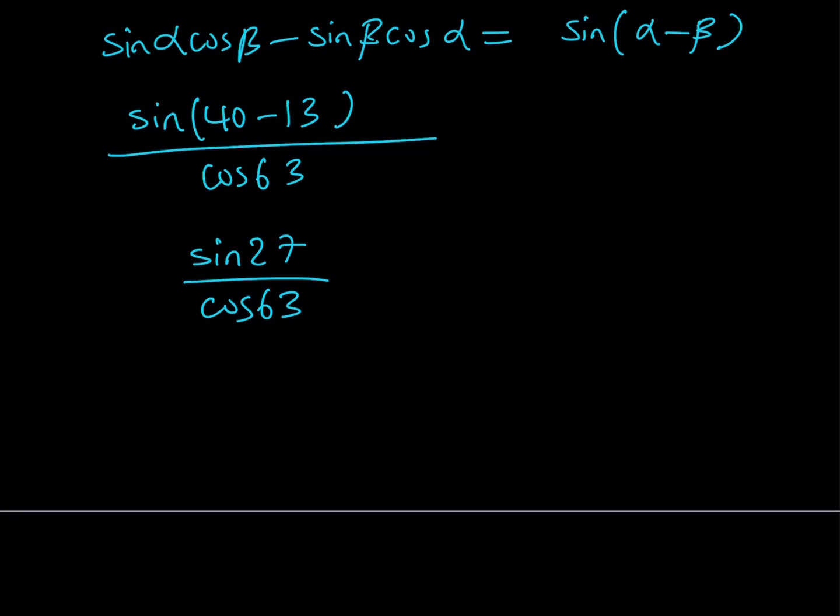Now notice that 27 and 63 are related. Not because they're multiples of 9 but they add up to 90 degrees. So 27 degrees plus 63 degrees is 90 degrees. So we kind of have two angles that are complementary.